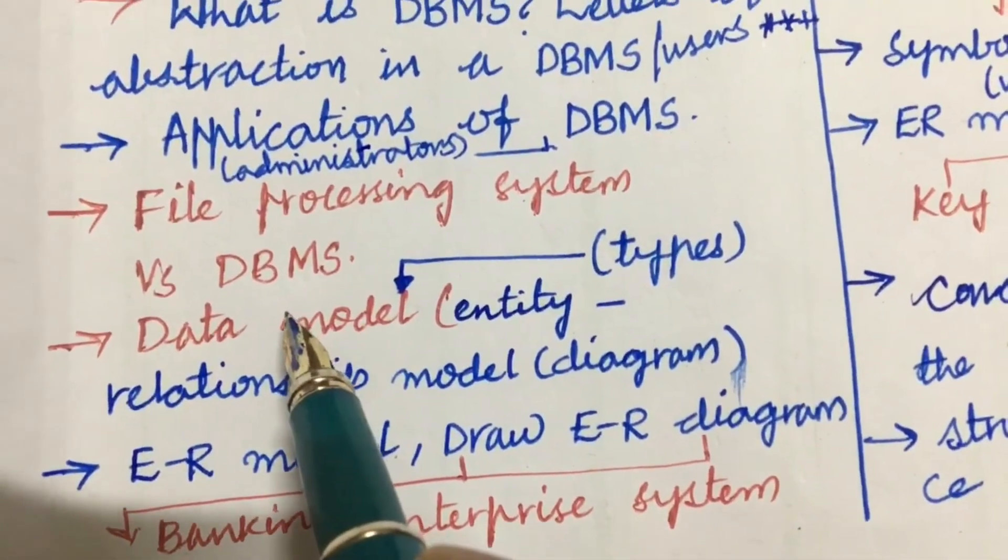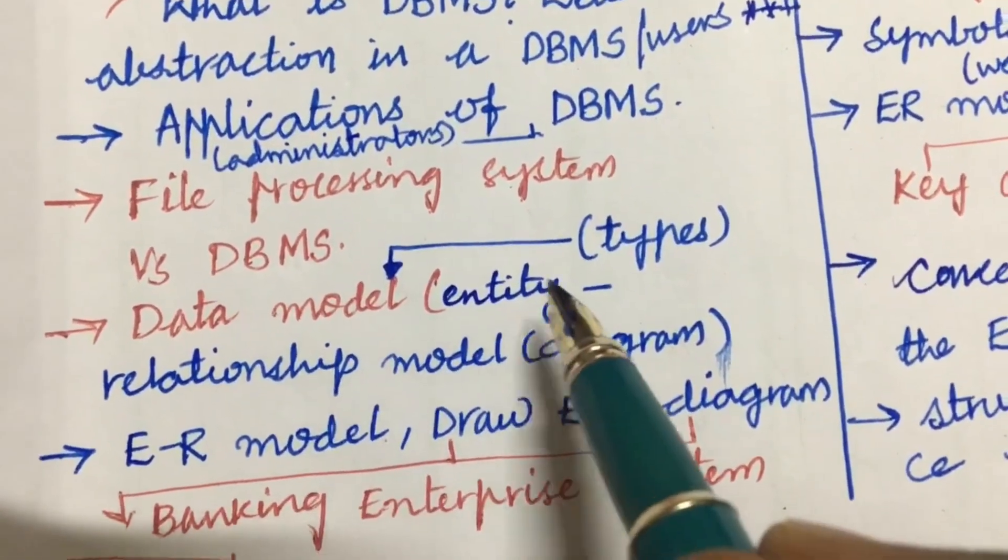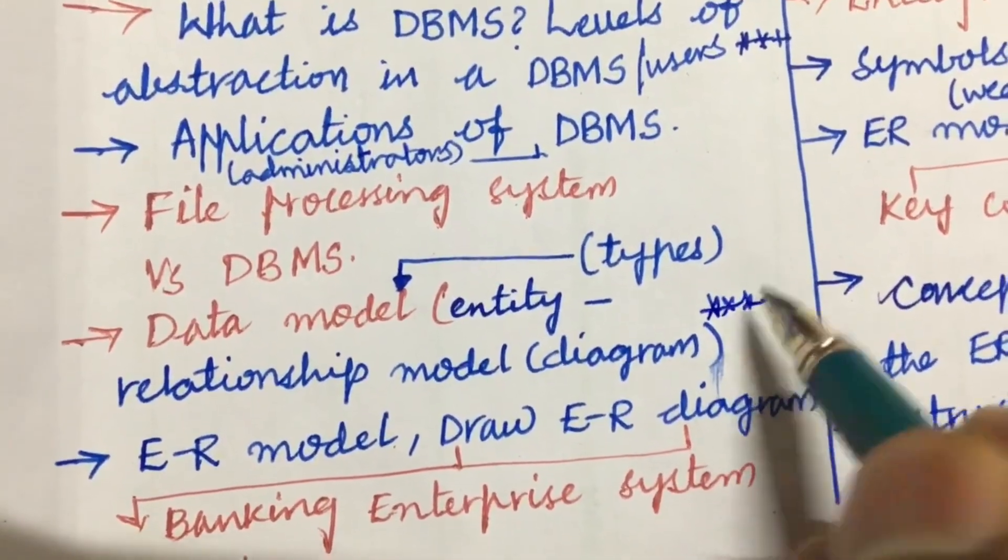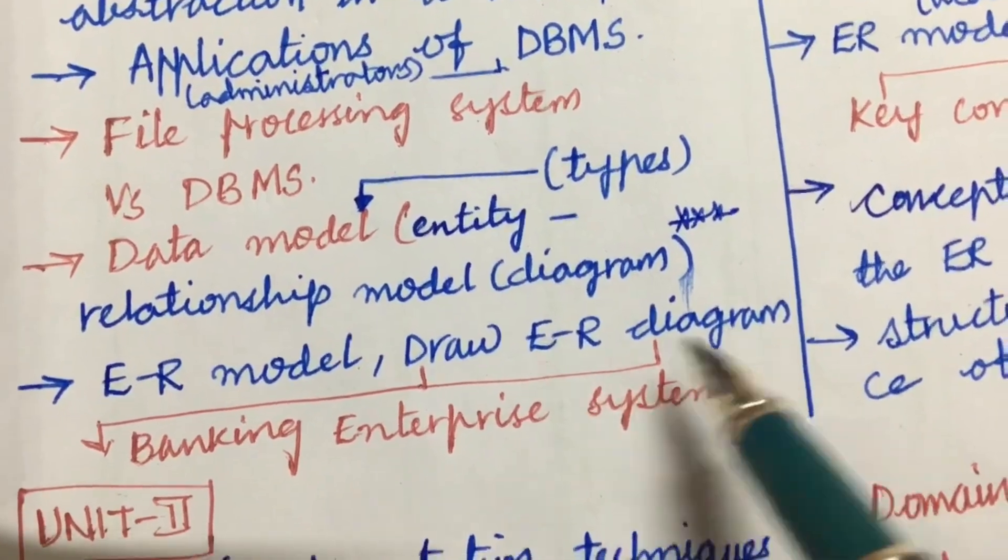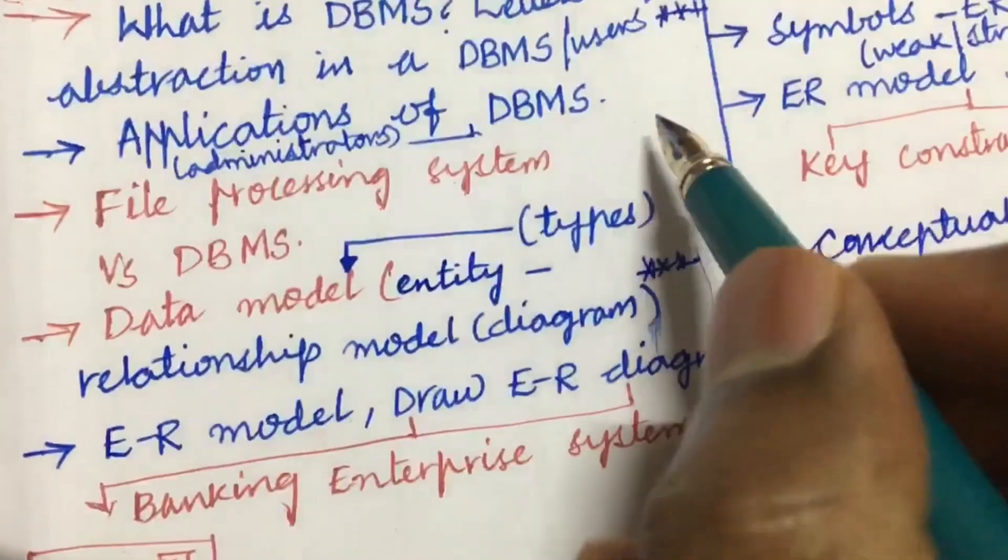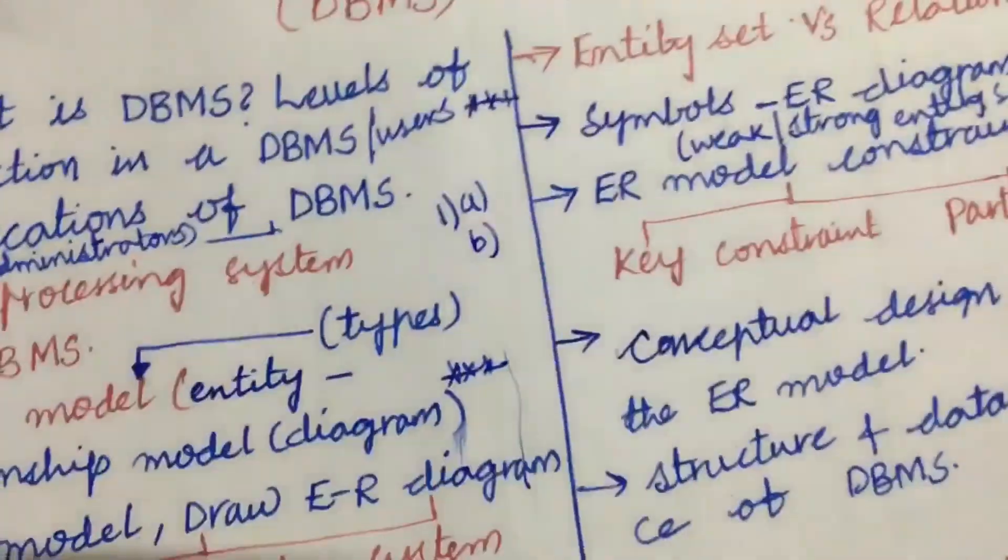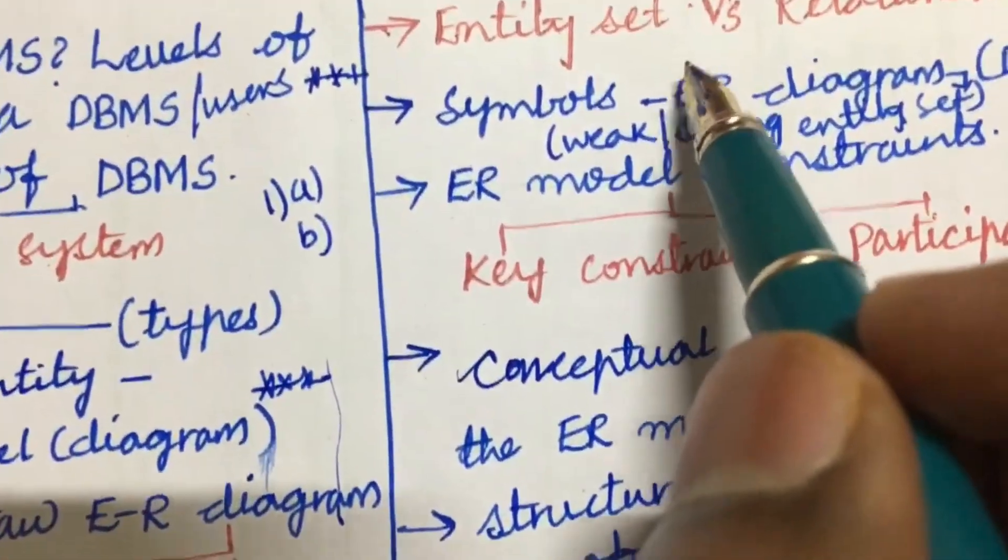Data model types and the data model entity relationship model along with diagram is also one of the gunshot questions. Later, ER model and draw ER diagram for a banking enterprise system. From this part you'll be getting the part of 1A as well as 1B. Dear students, from first unit you can get only one and a half questions this time and do not expect two questions.